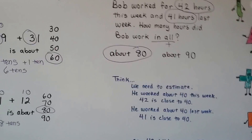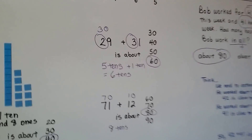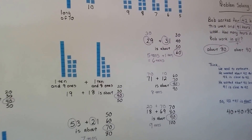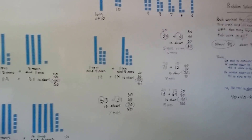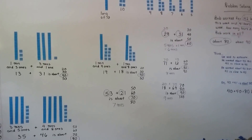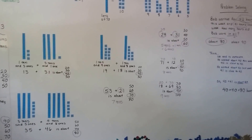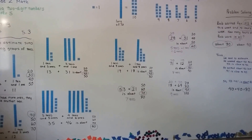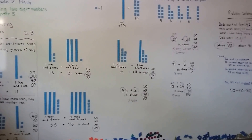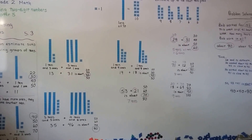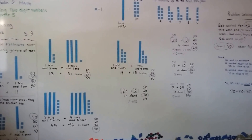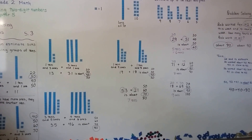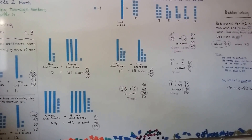So that's estimating sums. I don't want you to confuse this with rounding off — we'll get into that later on. Estimating means just making a smart guess, an educated guess, for an answer. We're going to start talking about regrouping when we add two-digit numbers. I hope I'll see you there. Bye.